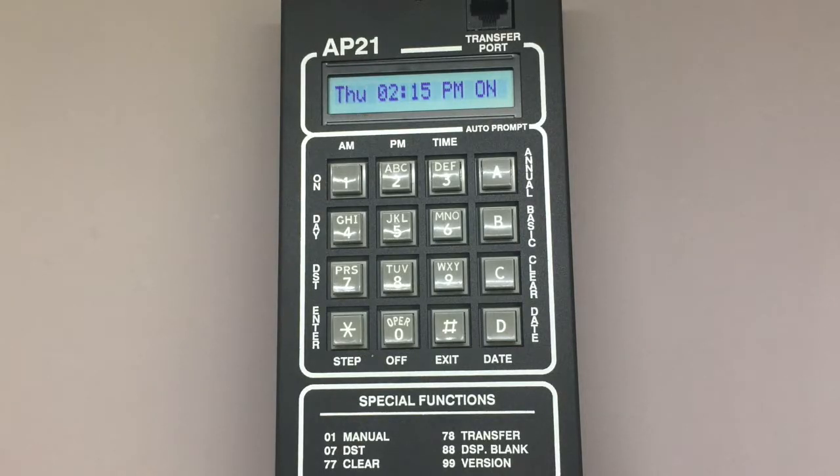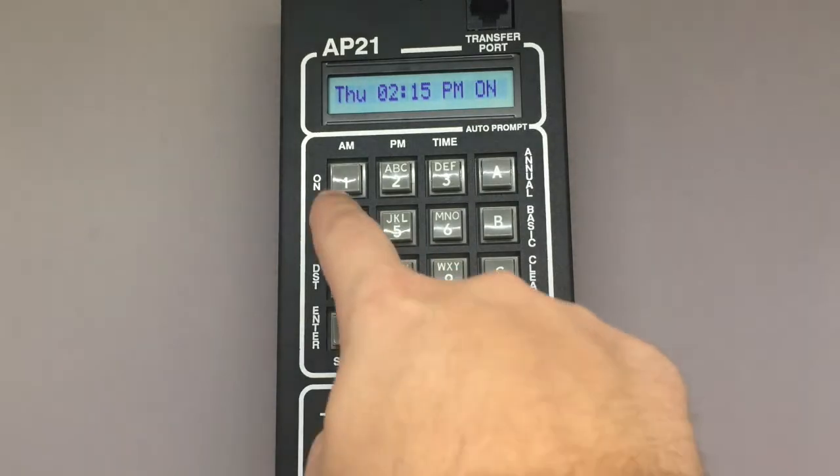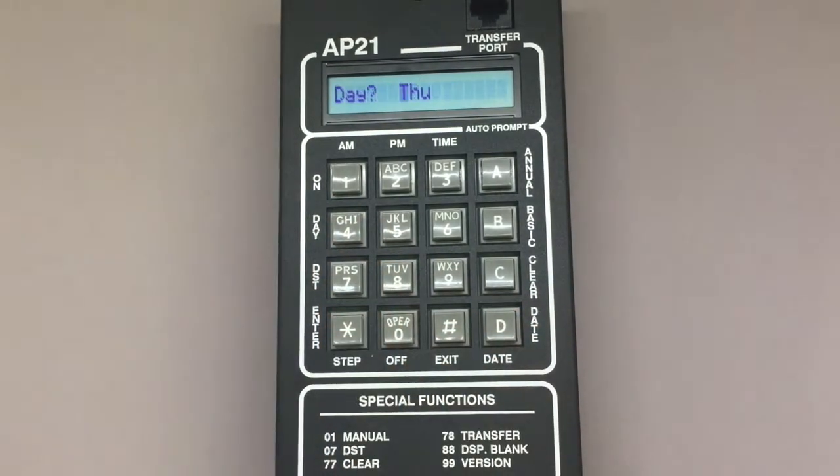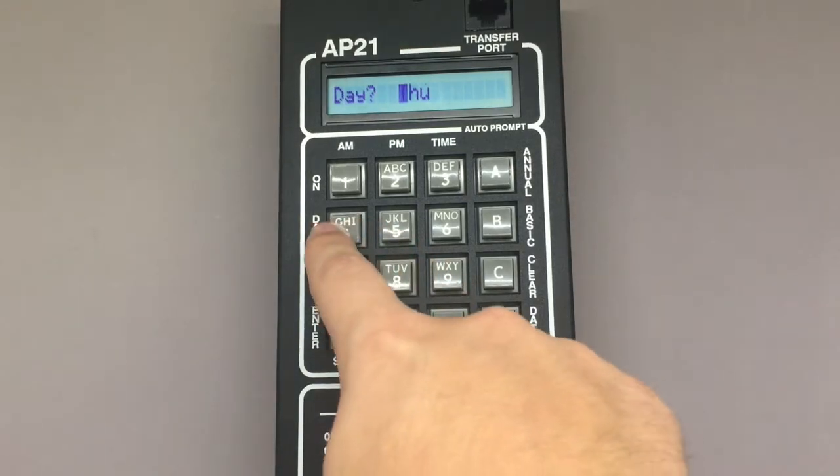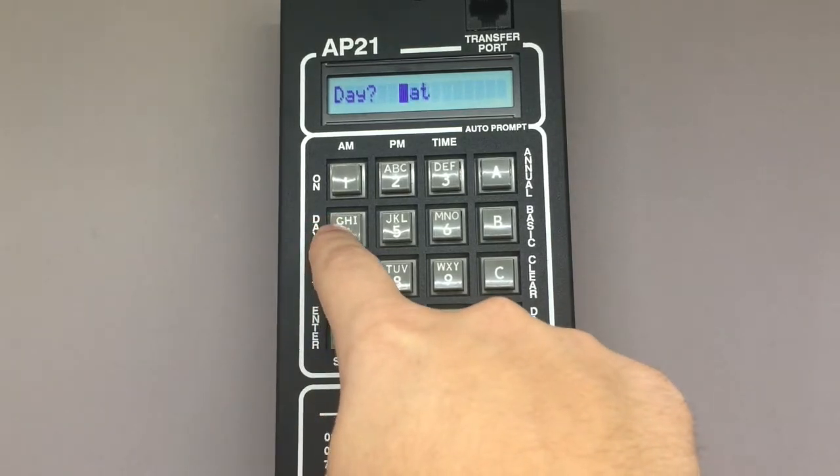To access the day of week input screen, press 4, star from the home screen. You'll see on this screen which day is currently stored in the AP21. To change this day to another day, press 4 on the keypad until the screen has scrolled to the correct day.